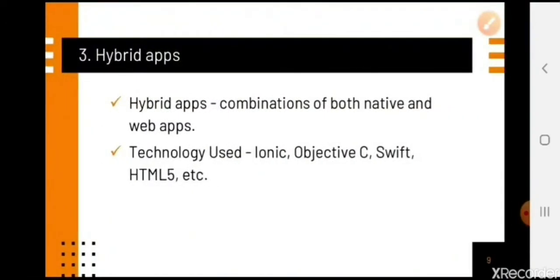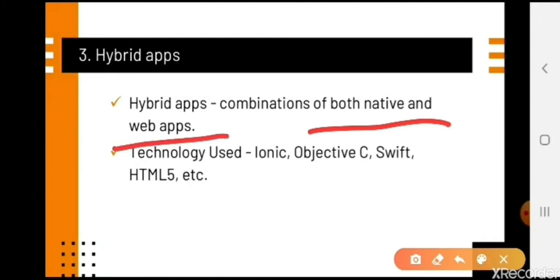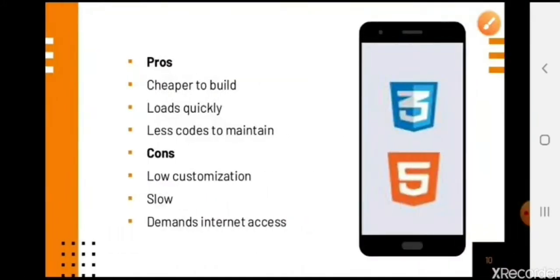The main points of hybrid apps are that they are a combination of native applications and web applications. The technologies used include Objective-C, HTML, Ionic, and Swift. Regarding advantages and disadvantages: they are cheaper to build, quickly load, and require less code to maintain. Disadvantages include that there is not much customization possible, you can't make many changes, improvements are limited, they can be a little slow, and they require internet connection which can be a problem.